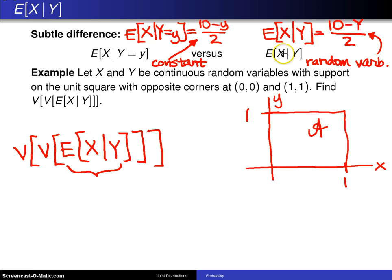From the discussion over here, the expected value of X given Y is a random variable. When you go one layer deeper and say what is the variance of a random variable, well the variance of a random variable is a constant. And finally, when you come out one more level, what is the variance of some constant? Well the variance of a constant is 0. So the answer to this question is the variance of the variance of the expected value of X given Y is 0.